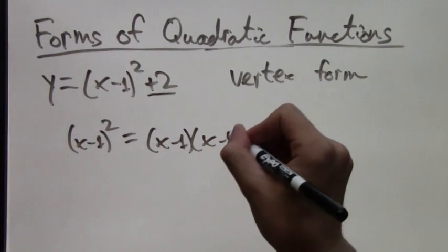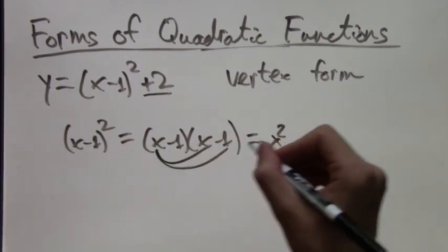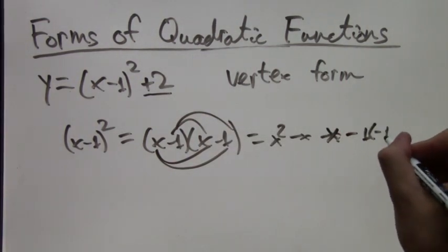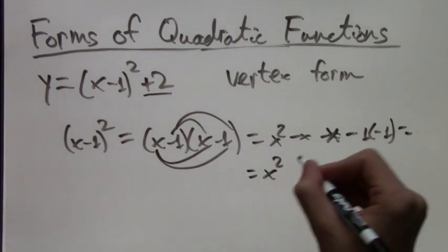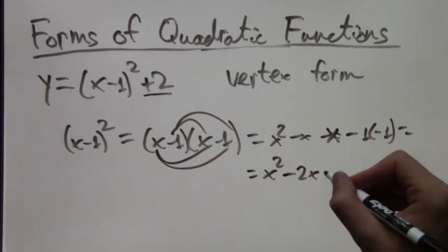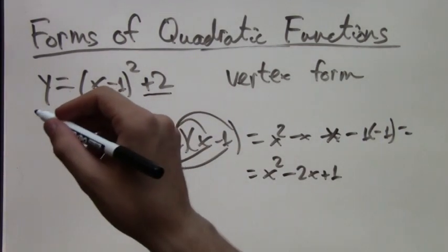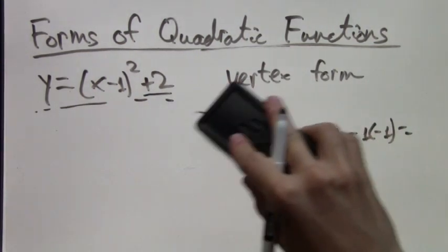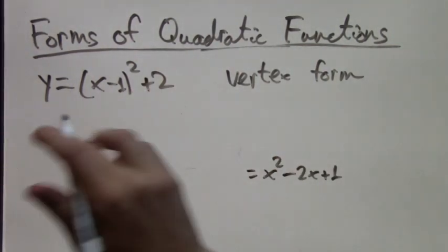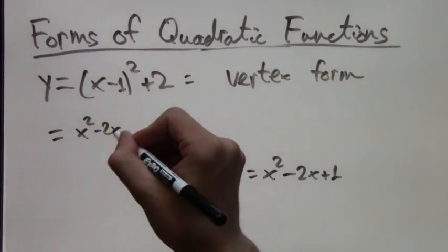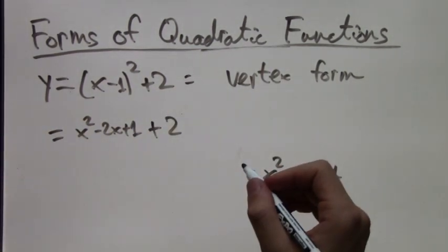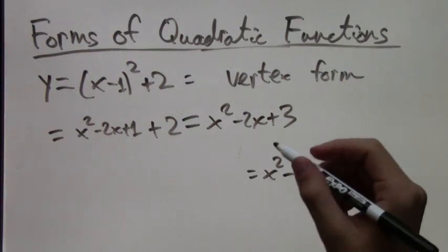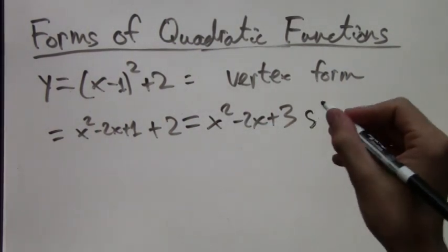As before we can just FOIL out. And we get x squared minus x minus x and minus 1 times negative 1 is going to be plus 1 in the end. This simplifies to x squared minus 2x plus 1. So our y, our function, is equal to x squared minus 2x plus 1 plus 2. We can't forget the plus 2 at the end because it's in the original function. And this simplifies to x squared minus 2x plus 3, which is again in standard form. So we've just converted vertex form to standard form.